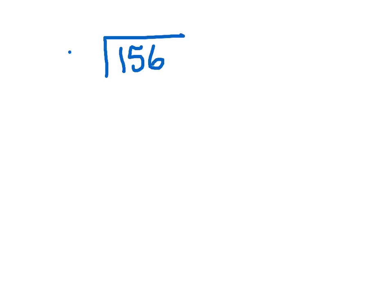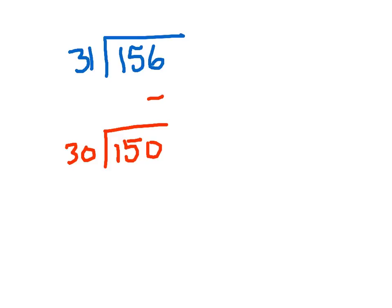Let's do a couple more examples. Remember, you want to look at the dividend and the divisor — what you're dividing by — to see if there are compatible numbers that will help you estimate an answer close to the actual answer. Let's say 156 divided by 31. I'm thinking, why don't we go 150 divided by 30? Easy to do that. 30 goes into 150 five times. I'm looking at these two numbers to find a common multiple and adjusting the problem accordingly.